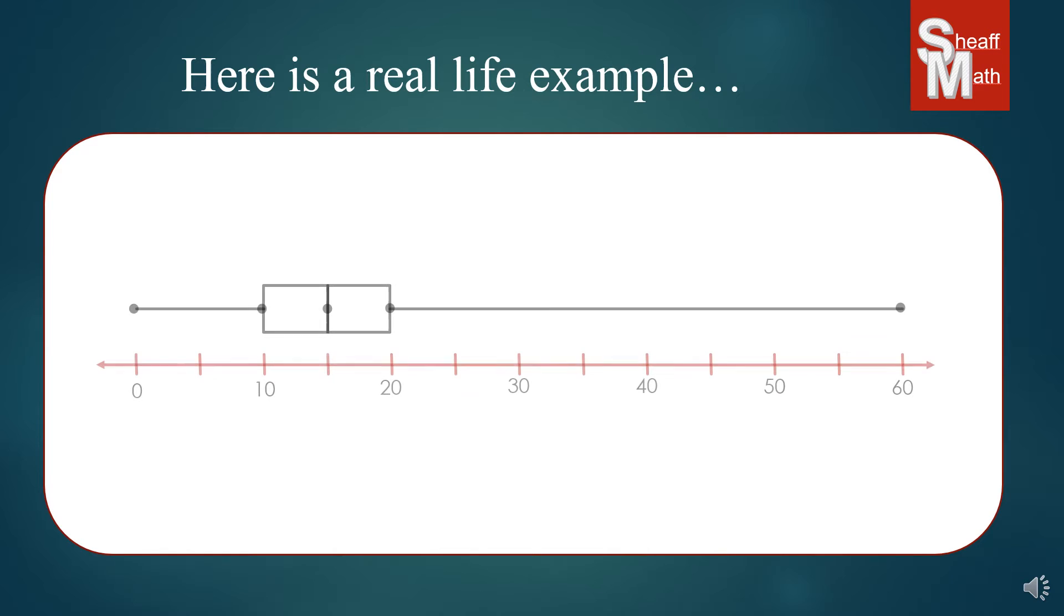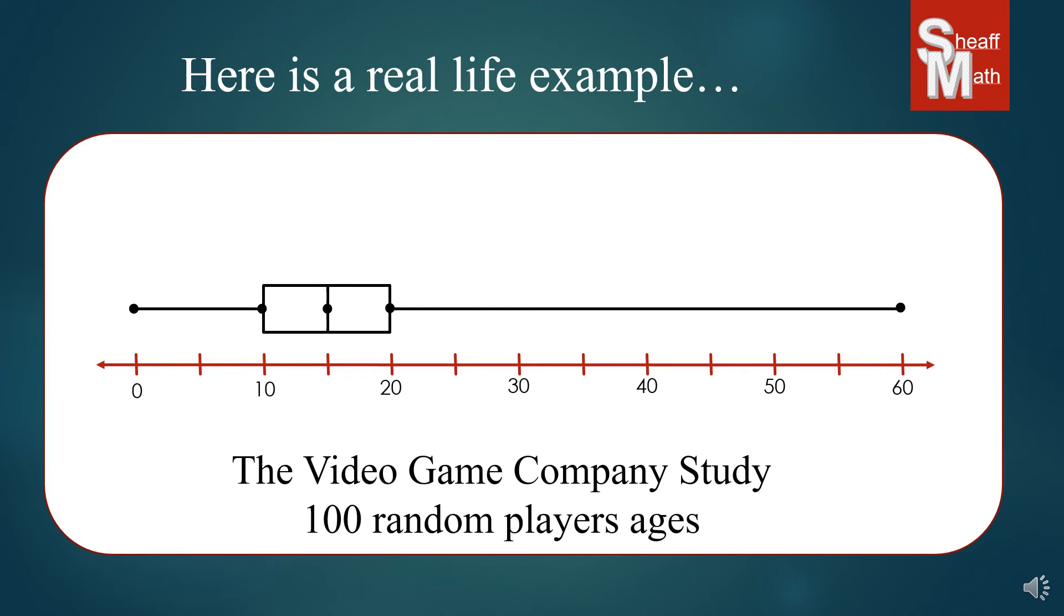All right, so here is a real-life example that happens quite a bit with businesses. We have this box and whisker plot and there was a study done by a video game company. They were trying to figure out how to advertise their video game to the right age group because their sales weren't that great.